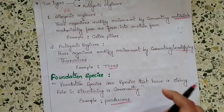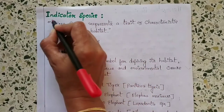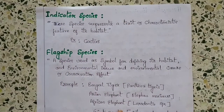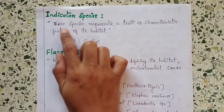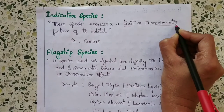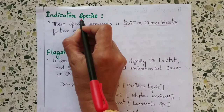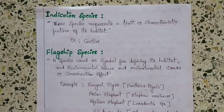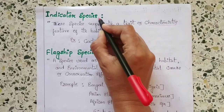Let us move on to the next term, which is indicator species. 'Indicator' in simple English means something that represents something. The definition is: these species represent a trait or characteristic feature of their habitat. An indicator species is an organism whose presence, absence, or abundance reflects a specific environmental condition.